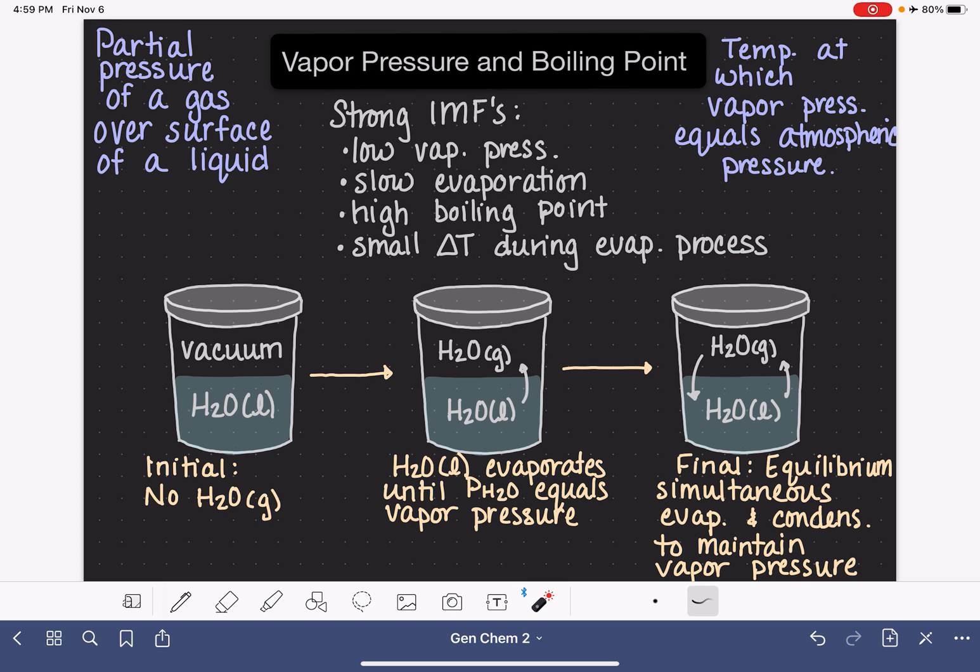So rubbing alcohol on your skin is evaporating very quickly due to low intermolecular forces, a high vapor pressure, a rapid evaporation, and a low boiling point. If we have a molecule that has very strong intermolecular forces, low vapor pressure, and a slow evaporation process, we won't really notice much of a temperature change during that slow evaporation process.